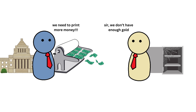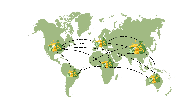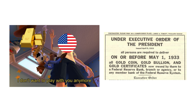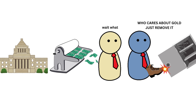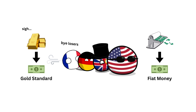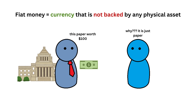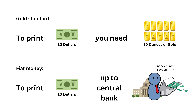This helped keep exchange rates stable because a country couldn't just print more money without having more gold. It stopped governments from printing too much money. But as economies grew and global trade expanded, countries started moving away from the gold standard. It was getting harder to keep enough gold to back every unit of currency, especially during wars and crises. By the 1970s, most countries had switched to a new system called fiat money. Fiat money is currency that has value because the government says it does, and people believe it. It's not backed by any physical asset like gold.